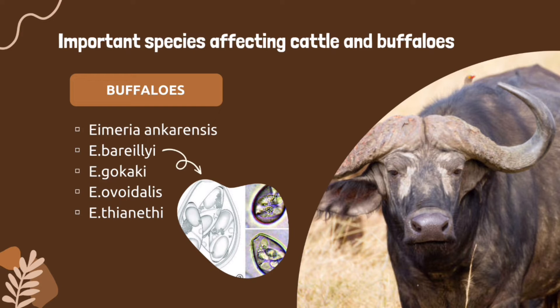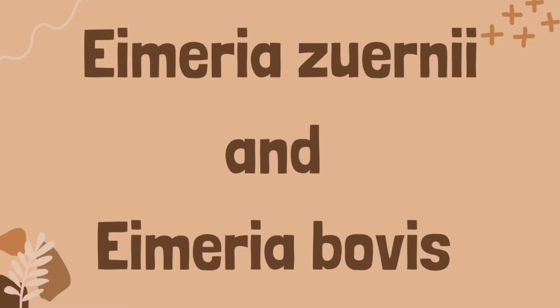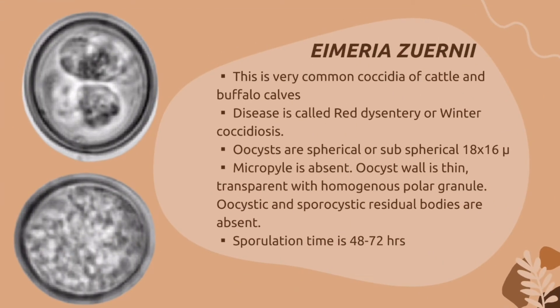Important species affecting buffaloes include Eimeria ankarensis, Eimeria bareillyi — the most pathogenic — Eimeria guevarai, Eimeria ovoidalis, and Eimeria thianethi. Now let's focus on Eimeria zuernii. It is a very common coccidia of cattle and buffalo. Cows 4 to 18 months old are mostly affected, and the disease is called red dysentery or winter coccidiosis.